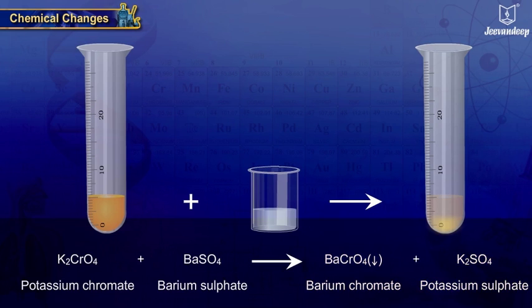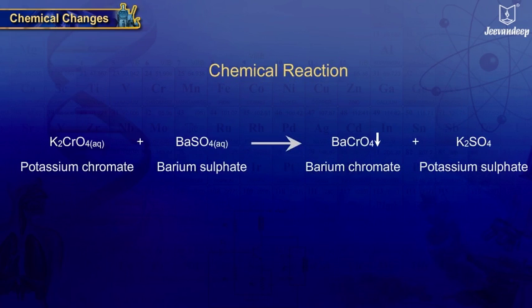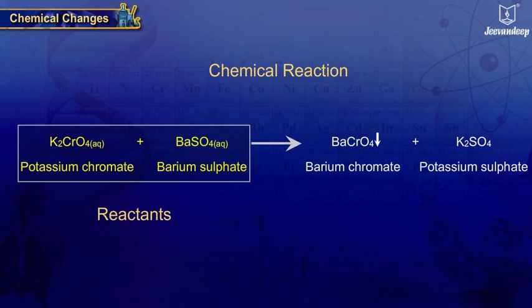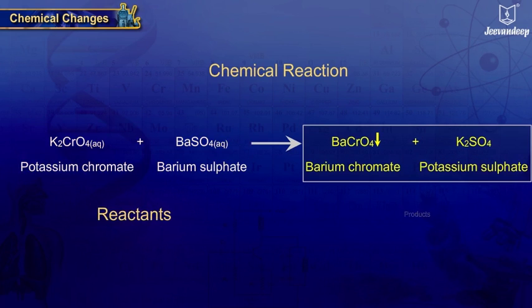Every chemical change results in a chemical reaction which is represented by a chemical equation. The substances that undergo change are called reactants and substances formed at the end are the products of the reaction.